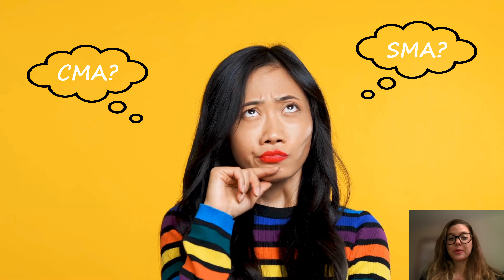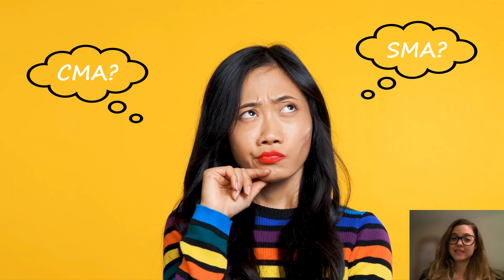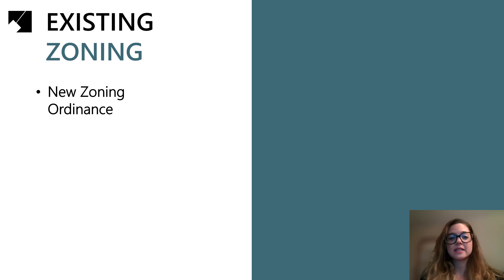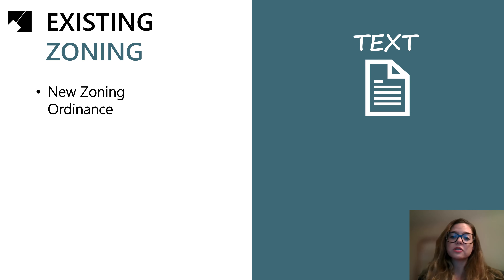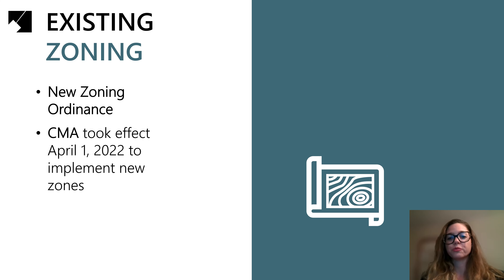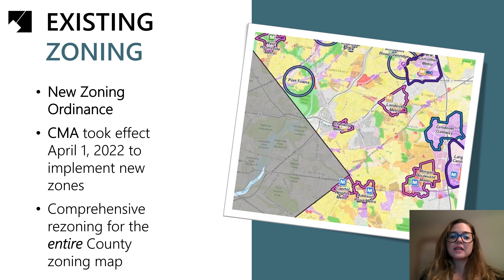Why are we doing an SMA if we just did a CMA? In 2018, the Zoning Ordinance was adopted by Council Bill CB13-2018. The Countywide Map Amendment, or CMA, was the second phase of the process for the zoning ordinance, which applied the new zones to all properties in the county, with the exception of the City of Laurel, which has its own zoning ordinance and zoning map. So the CMA was a comprehensive rezoning for the entire county zoning map, as opposed to just a section of the county. The new zones and zoning map went into effect April 1st of this year.